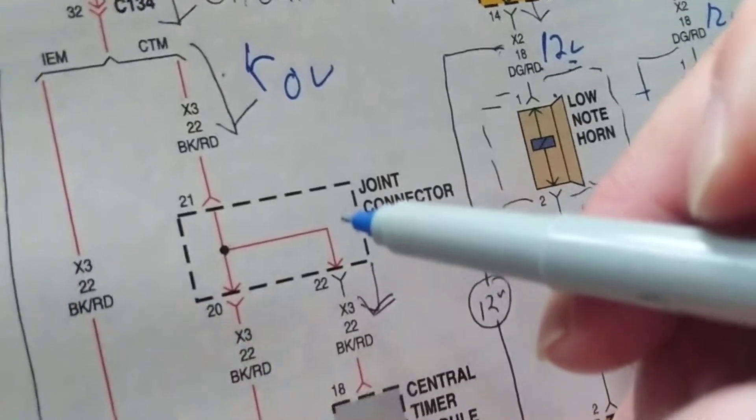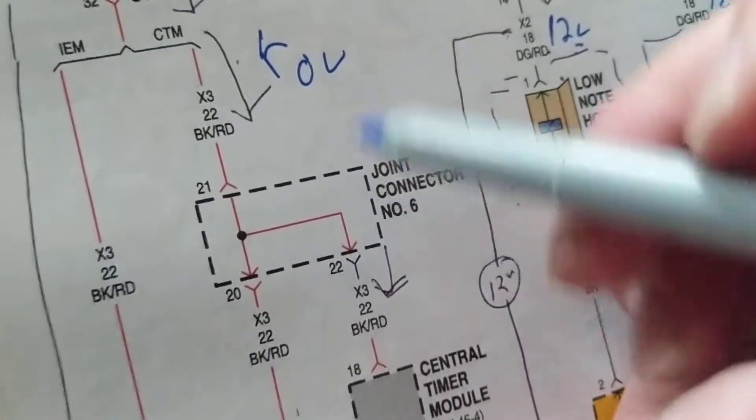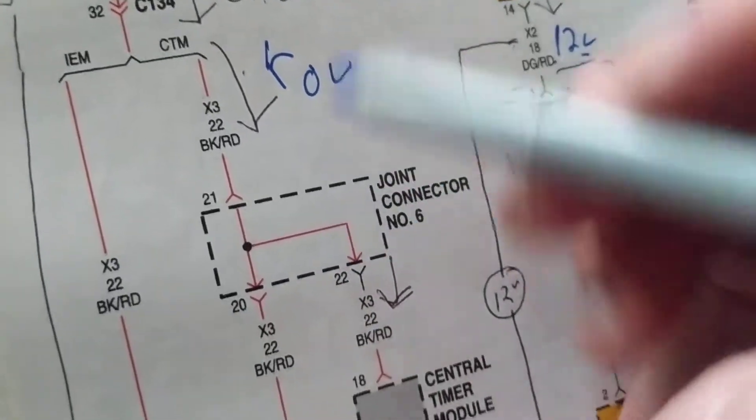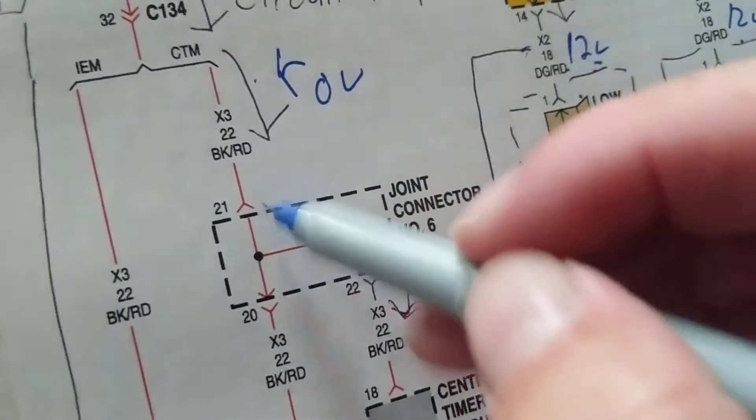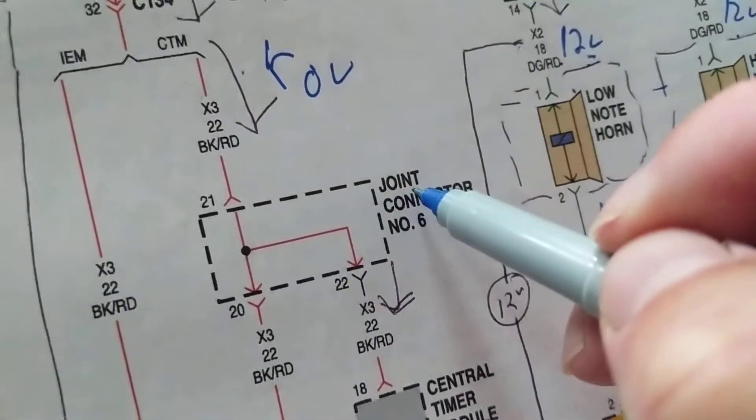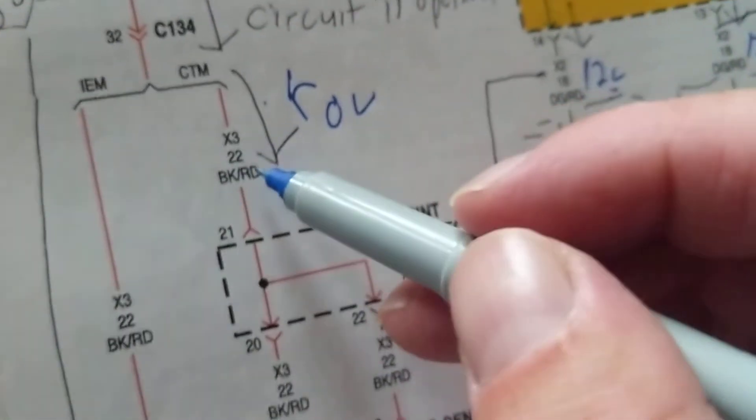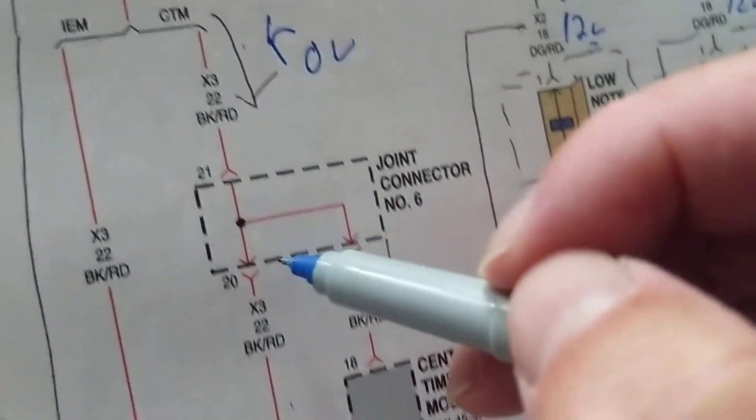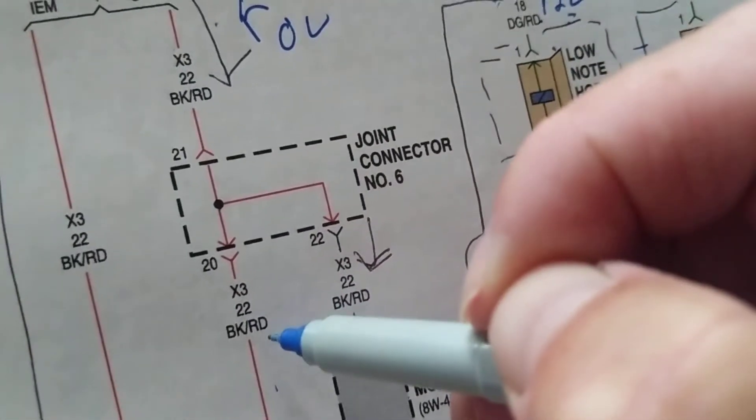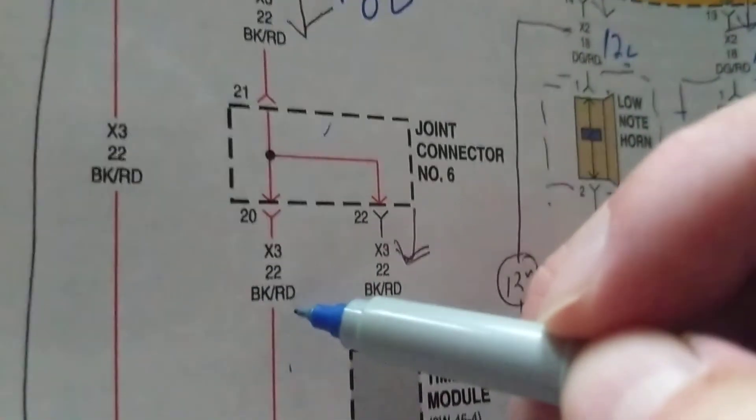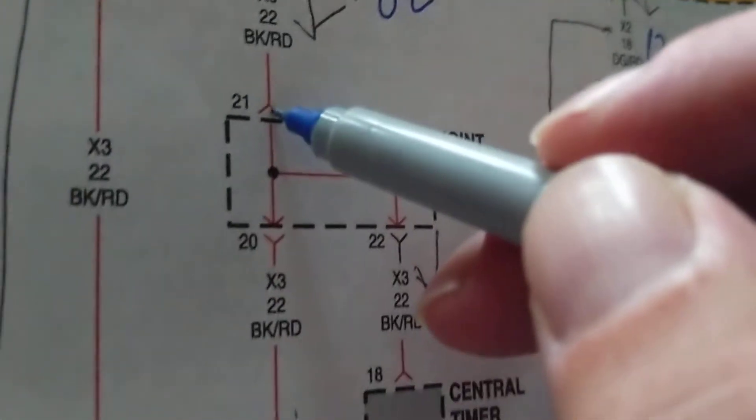When we come to C134, we come over here, we come to something called a joint connector. Now you see these type of things in Asian cars, Toyotas, Hondas - they love these things. All it is, it's like you're connecting the jumpers together, the wires together. It's called a fancy joint connector number six. So in other words, this black and red striped wire will be now connected to a black and red wire again, but it'll go through pin 21 and it'll come out pin 20.